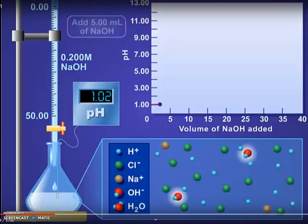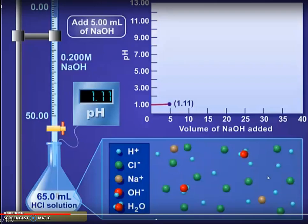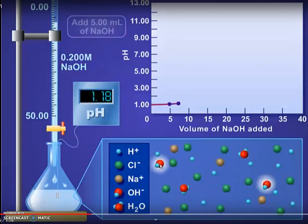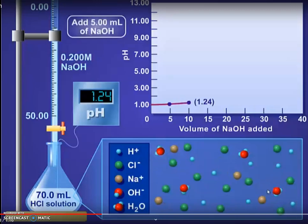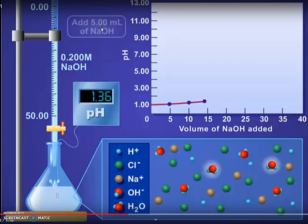As it's added, the pH starts to increase. This is because some of the acid has been used up. This trend continues. The pH starts to increase slightly again. Ten mL have been added, it's now pH 1.24. And at 15 mL here, we can see it's 1.40.